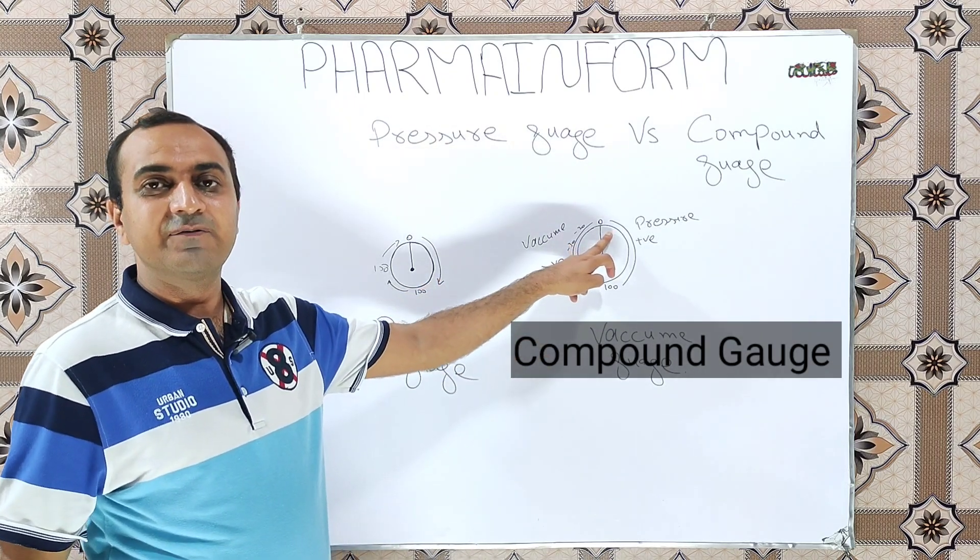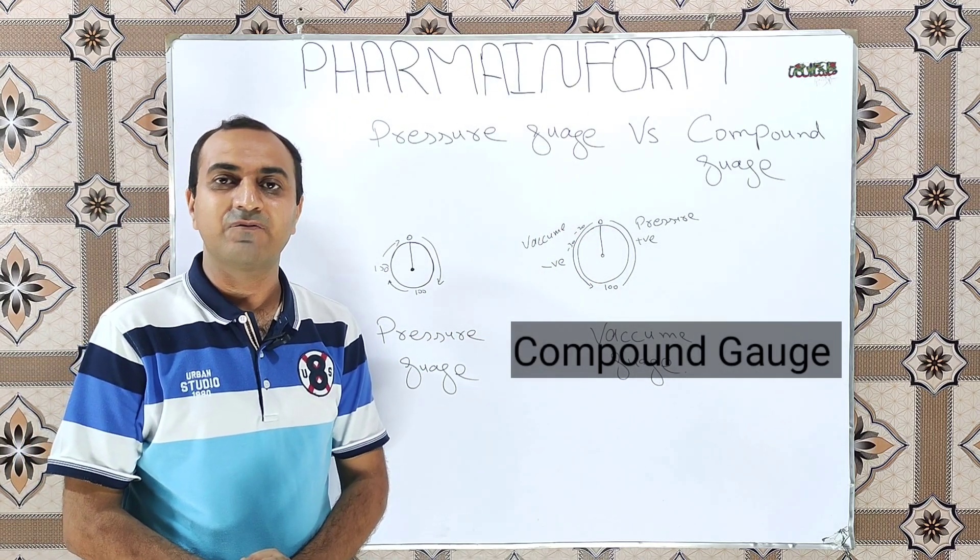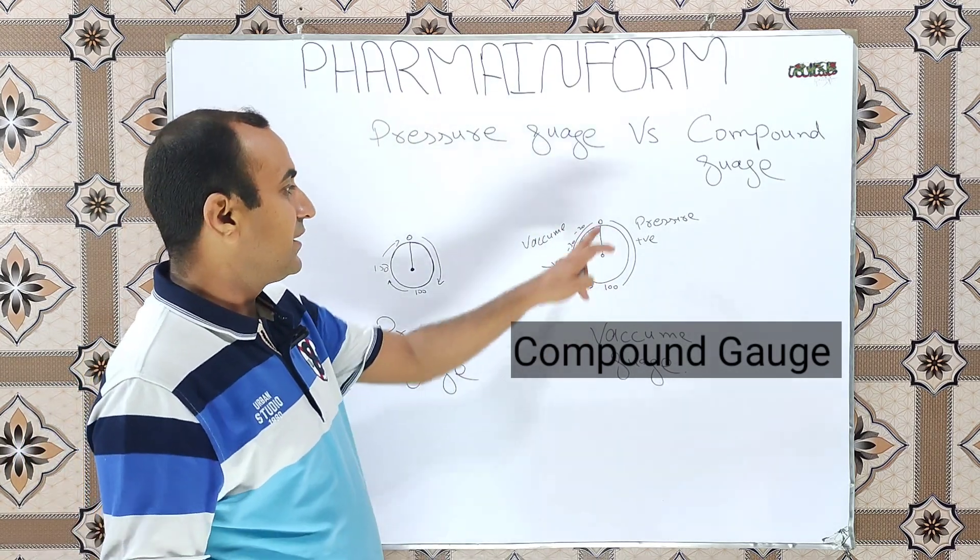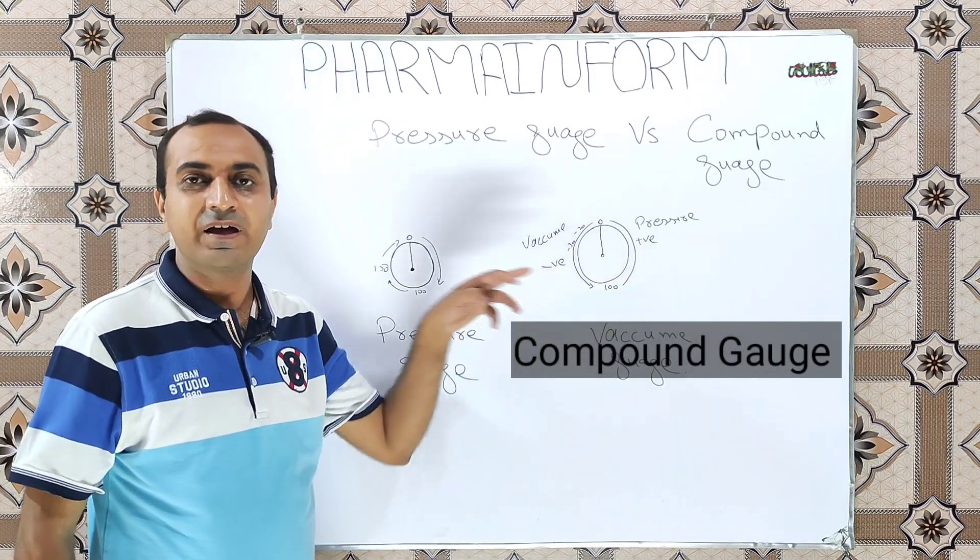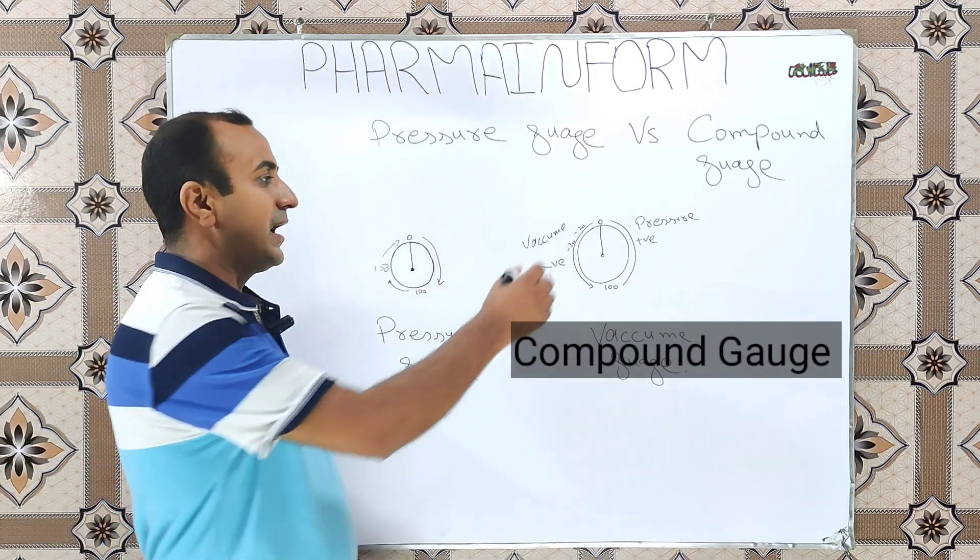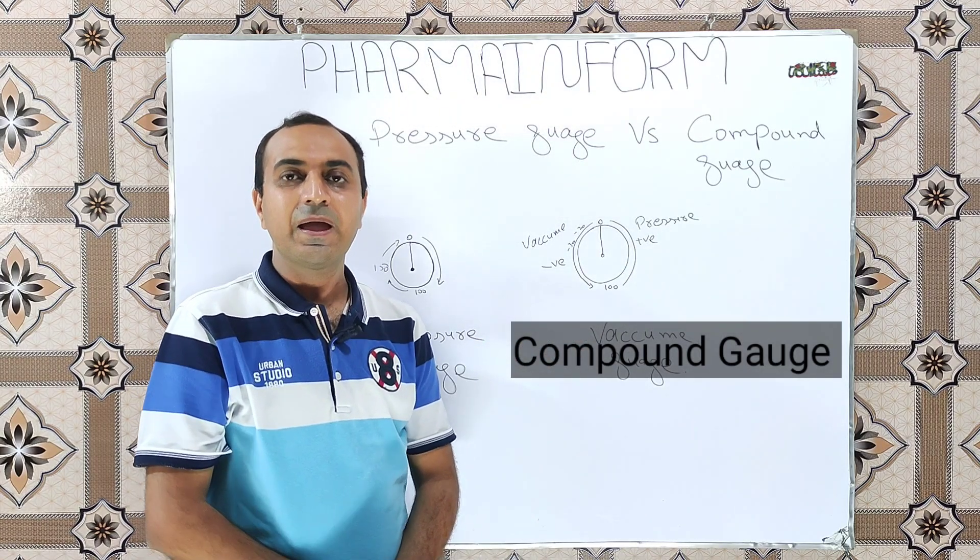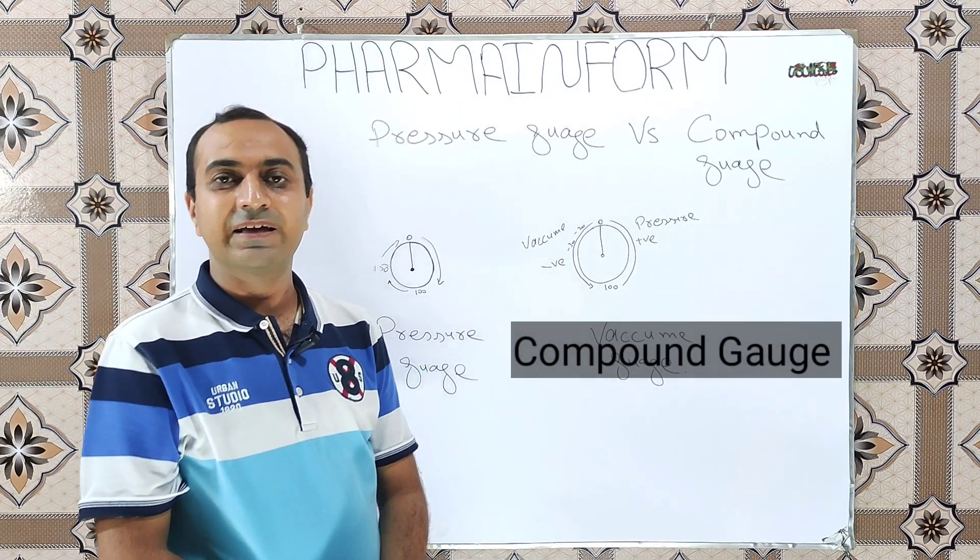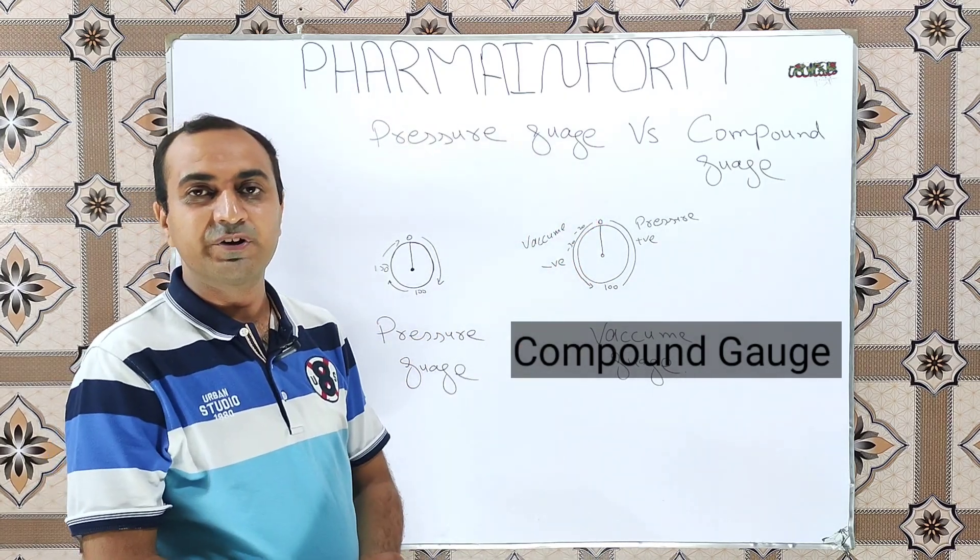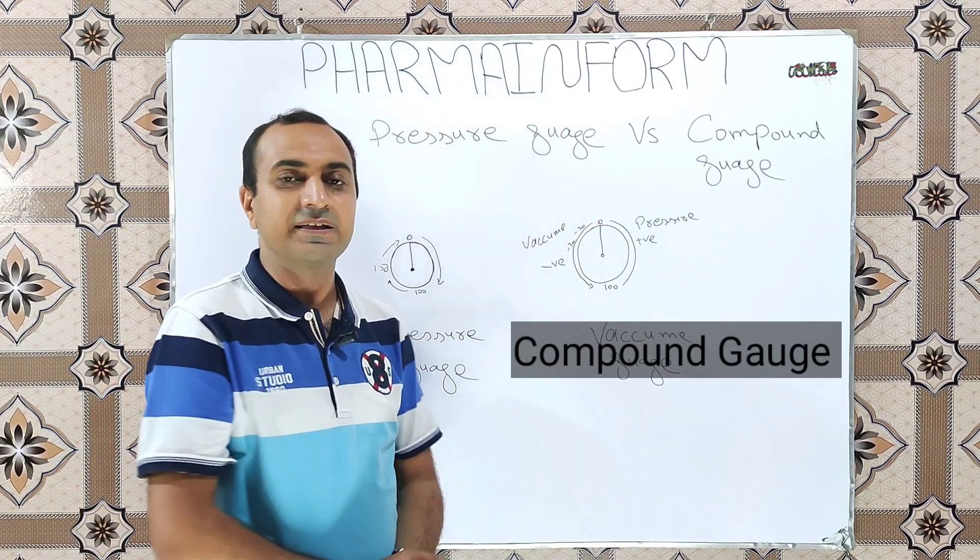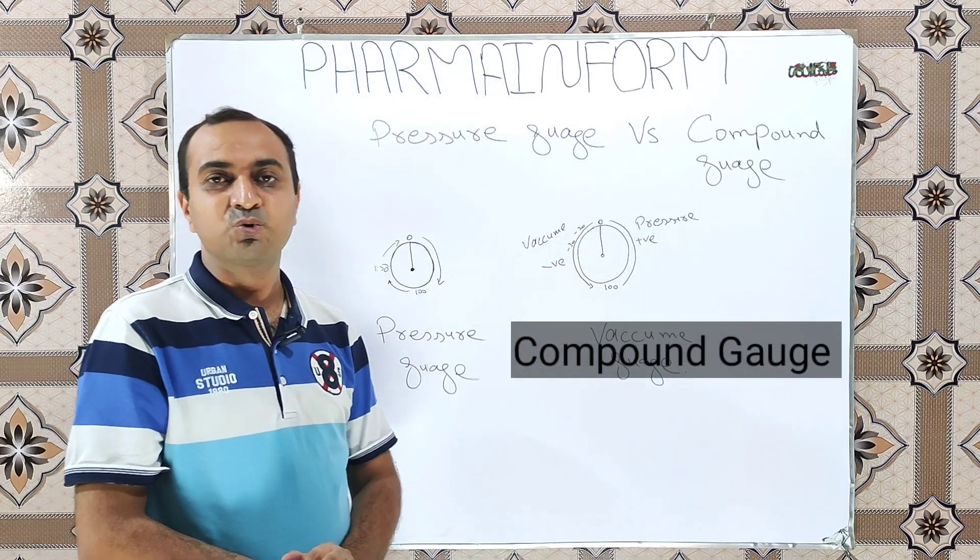At the atmospheric pressure the needle will be at zero. When we apply pressure, when pressure is increased, it gives us value in the positive digits and moves towards the 100 value. A positive value will give us the reading of the pressure. But when we apply the vacuum, the needle will move in the opposite direction and give us the reading in the negative value.